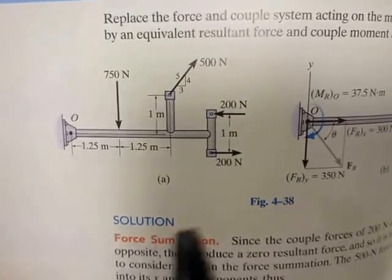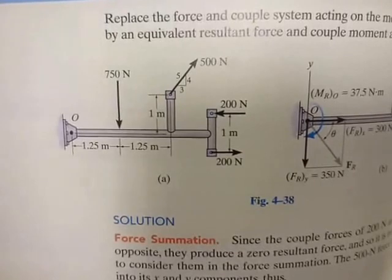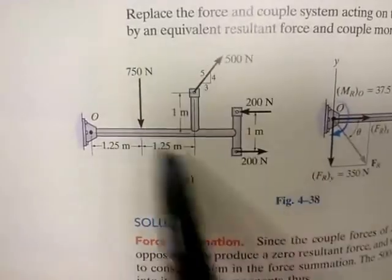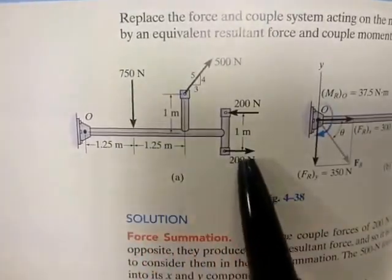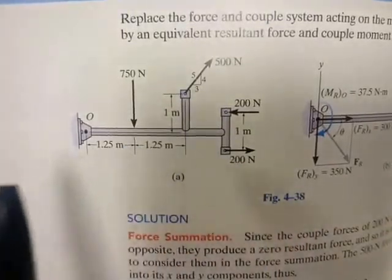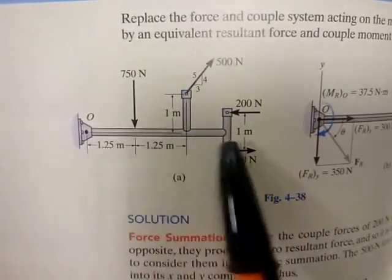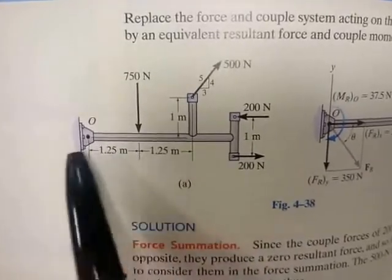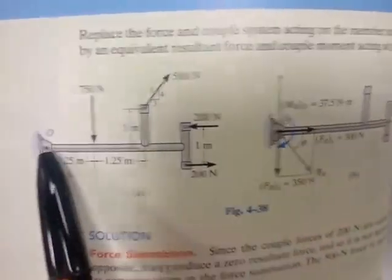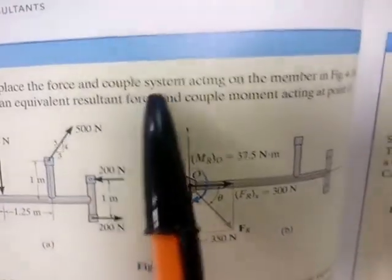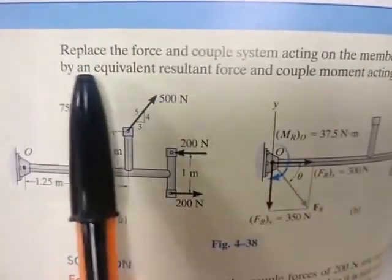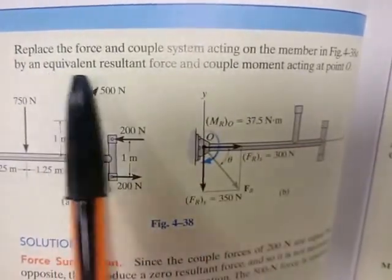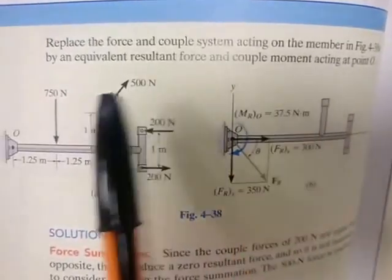In the previous videos, I tried to give the essence of the idea of what we're trying to do: we're trying to simplify a system that has forces and couples, simplifying it to a single force and couple system at a specified point on the body. They've chosen point O — replace the force and couple system acting on the members by an equivalent resultant force and couple moment acting at point O.